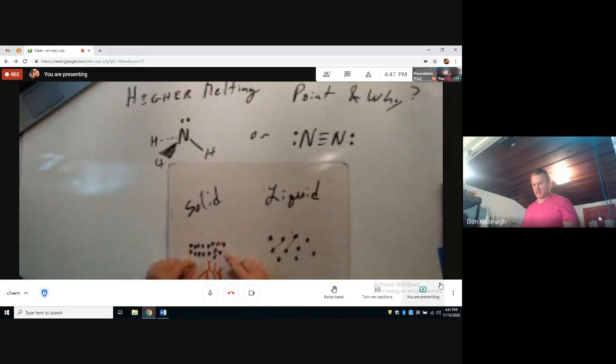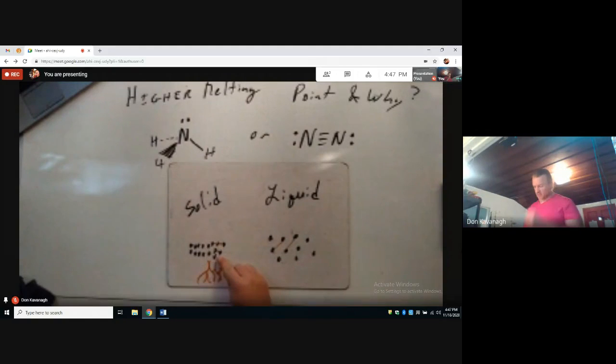The heat added is used to break the interactions between the molecules. In liquid phase, post-melt, these lengths are longer, so those forces or interactions must be overcome.